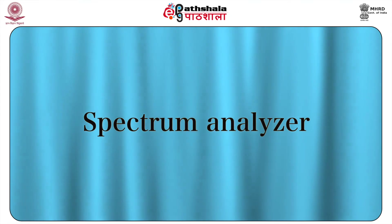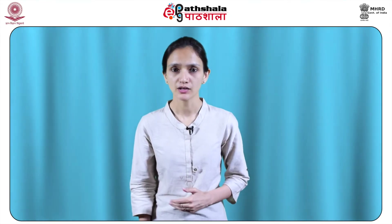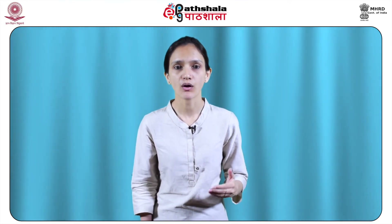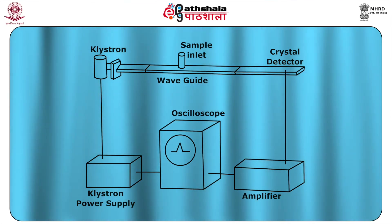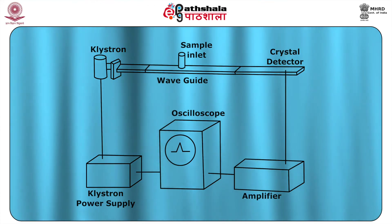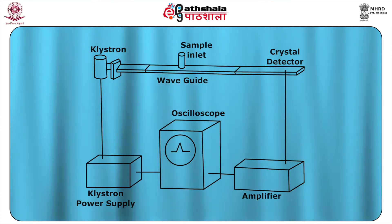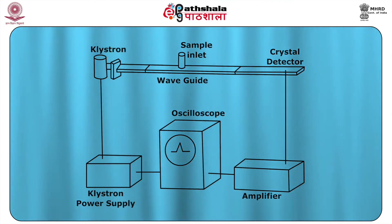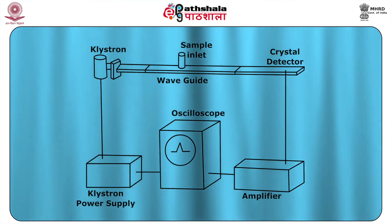The fifth component is the spectrum analyzer. It consists of an amplifier of detected energy and an indicator which may be either a cathode ray oscilloscope or a pen-and-ink recorder. The vibrations emitted by the crystal produce an electric signal which is amplified and then displayed as a pattern on an oscilloscope screen or recorded on a chart. The main components of the microwave spectrometer are: klystron, sample inlet, crystal detector, wave guide, amplifier, oscilloscope, and a power supply to the klystron.